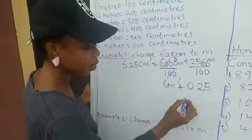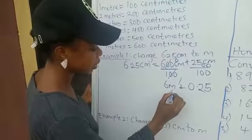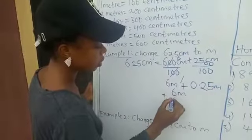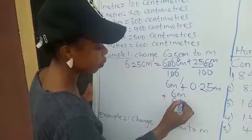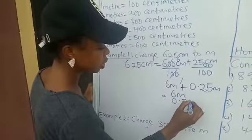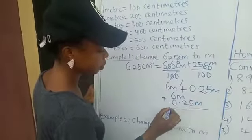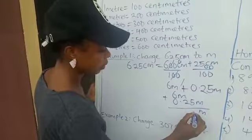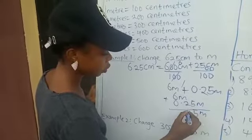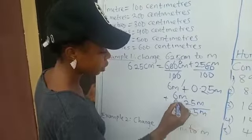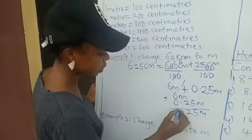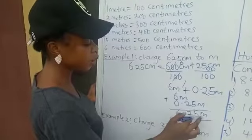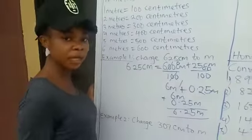Now we are going to add: 6 meters plus 0.25 meters. 6 plus 0 is 6. Our final answer is 6.25 meters.